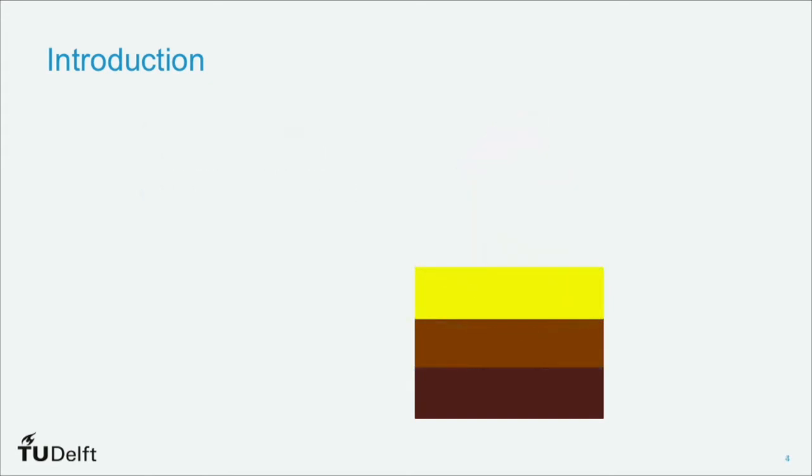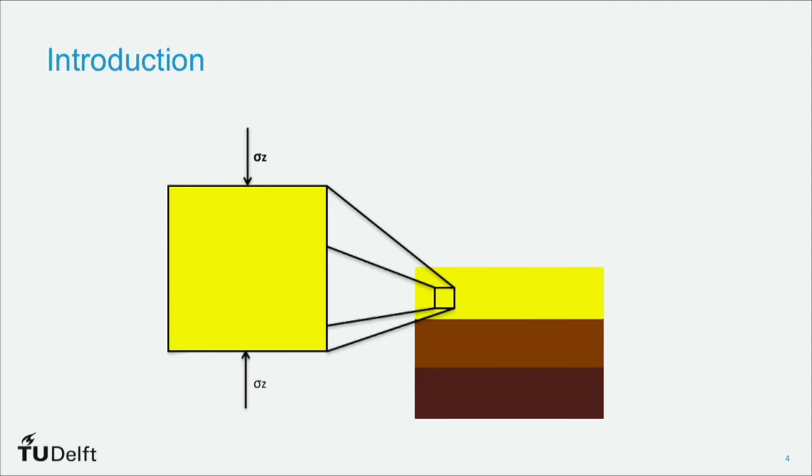So if we take a small element of this soil, we can characterize it as having vertical stresses and also having some sort of horizontal stress. What we observe in practice is these stresses are often related. So as we go deeper into the soil, the vertical stresses increase, but also the horizontal stresses increase.